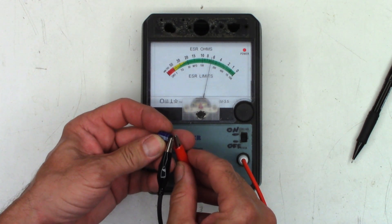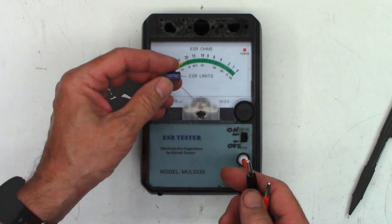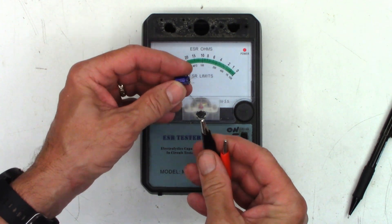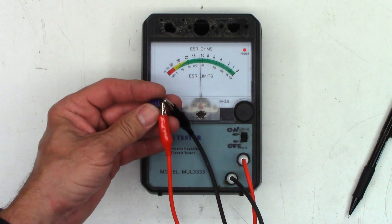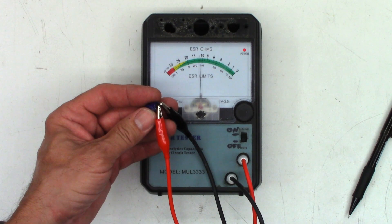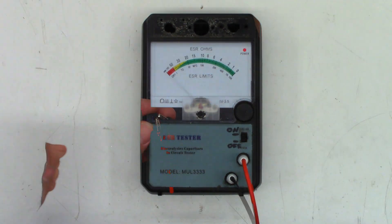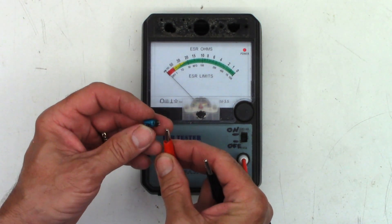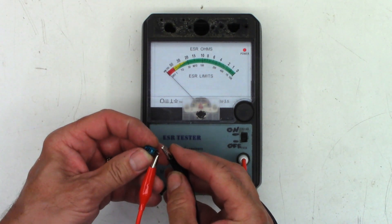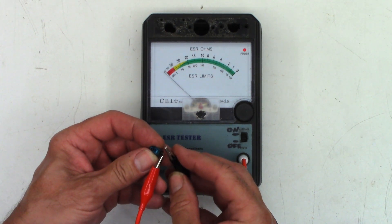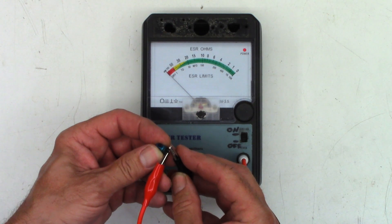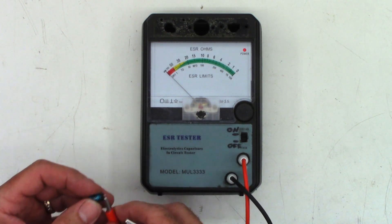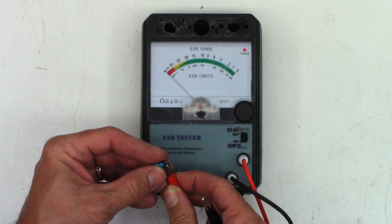Number five is going to be the Samwa 470 at 16 volts, and I'm seeing about probably 0.35 ohms. Next is the Samwa 100 at 50 volts. Now that one I'm seeing exactly six and a half ohms. Now for the Samwa 47 at 50, and this one I'm seeing about 12 ohms, I would say. On to the four caps that would not even read on the Blue ESR meter, and they will not even read on this one.